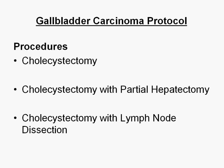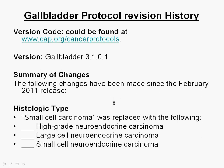There are several ways one can get a gallbladder cancer specimen — it could come as a cholecystectomy, or it could come with cholecystectomy and partial hepatectomy, with or without lymph node dissection. It is not uncommon to get a gallbladder first, and when the diagnosis of cancer is made, it is followed up a few weeks later with a re-hepatectomy. The version we are talking about today was released in June last year — version 3.1.0.1. The main difference between this and the previous version is that high-grade neuroendocrine carcinoma was divided into small cell and large cell, and this is done for all four of the other five checklists we'll be talking about today.